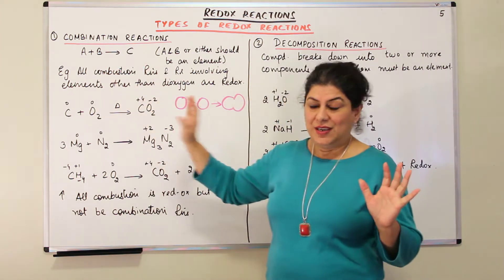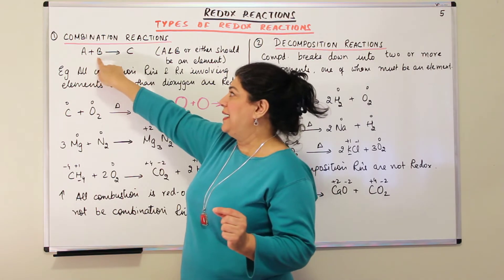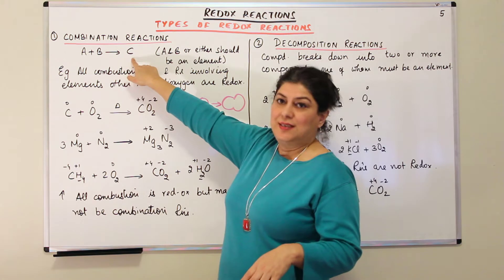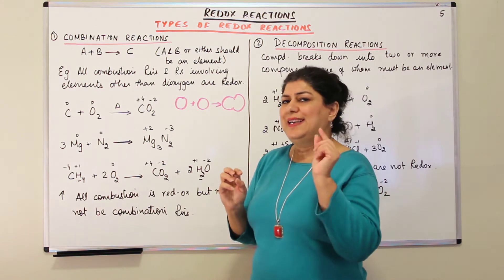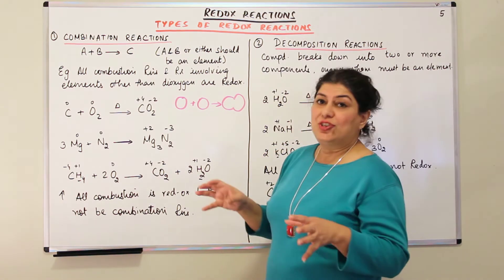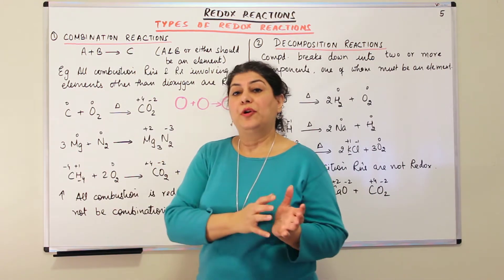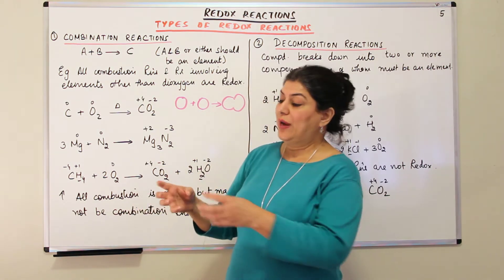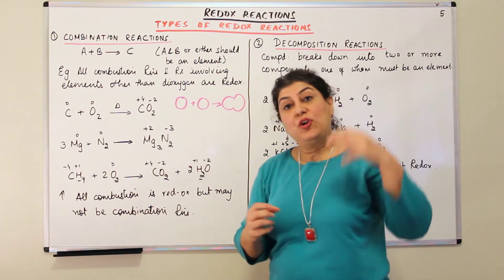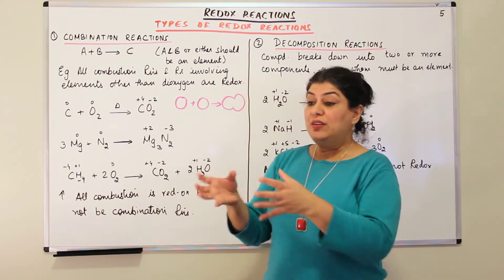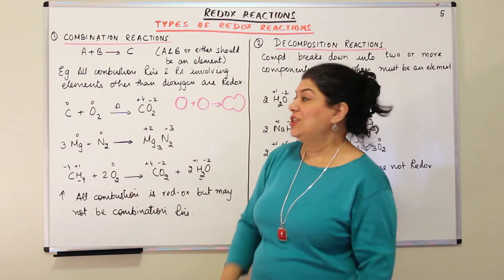In a Combination Reaction, you have two reactants — let us say A and B — and they combine together to give you the product C. Both A and B can be elements, or at least one of them should be an element. It's not necessary that you have only two components; you could have more than two components combining to form one product. So in a Combination Reaction, two or more reactants combine to give one final product. To check whether it is a Redox Reaction, you verify by checking their oxidation numbers.